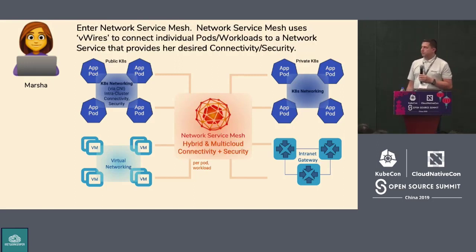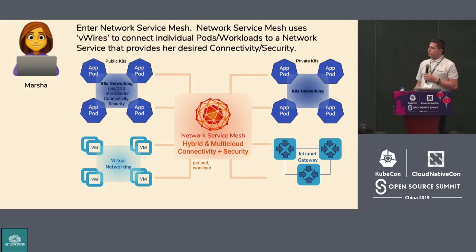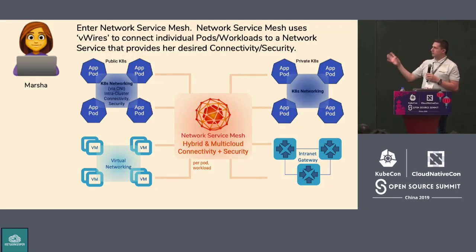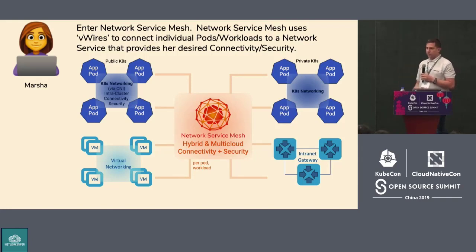That's one of the things we're trying to solve with Network Service Mesh. We have this concept of virtual wires — an abstraction of connections that will help her request a network service implementing point-to-point connectivity. Of course, under the hood there's still all the inter-cloud networking going on, but the network service can be requested straight from the pod level, which actually helps her very easily implement her distributed application.